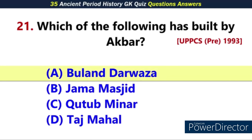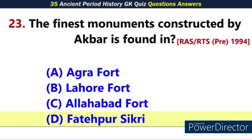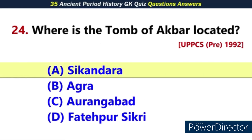Q21. Which of the following was built by Akbar? Answer: A. Buland Darwaza. Q22. Which of the following Mughal emperors introduced educational reforms? Answer: D. Akbar. Q23. The finest monument constructed by Akbar is found in — Answer: D. Fatehpur Sikri.